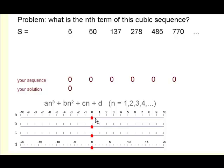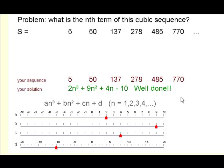Well, that's easy enough. The a is 2, so it's 2n³, 9n², 4n, and take away 10. And we've done it.